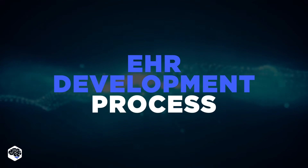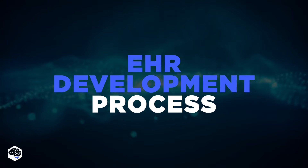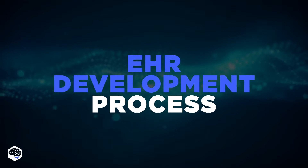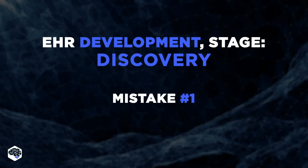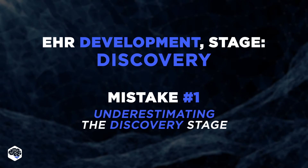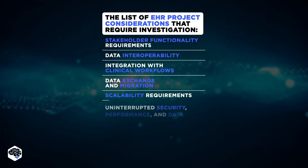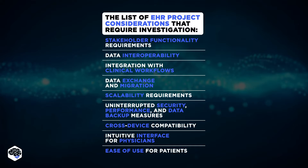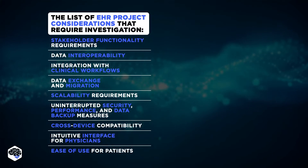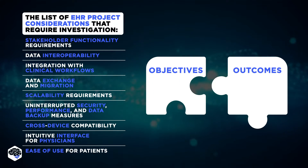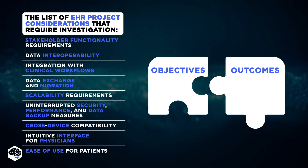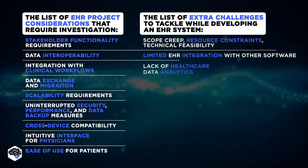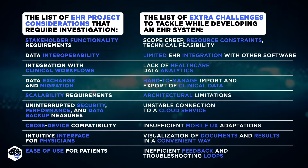Considering all these complexities involved, the EHR project is no easy feat for developers. So how can successful EHR development and implementation be ensured? First, a successful EHR project starts from a thorough discovery stage covering functionality requirements, data exchange workflows, user experience, and many more. Most importantly, it's crucial to recognize that there is no single answer to how a perfect EHR should look. Instead, Jelvix experts advise focusing on building a highly personalized system to perfectly align unique business needs with project objectives and outcomes. At this stage, it's also important to map out potential challenges and prepare a plan for mitigating these risks effectively.